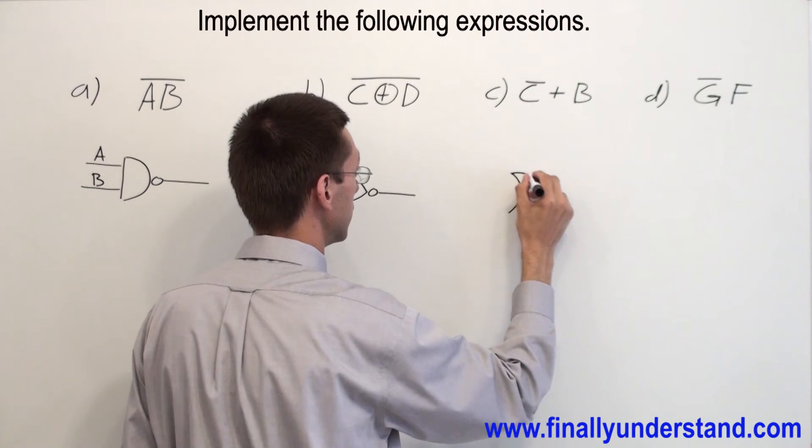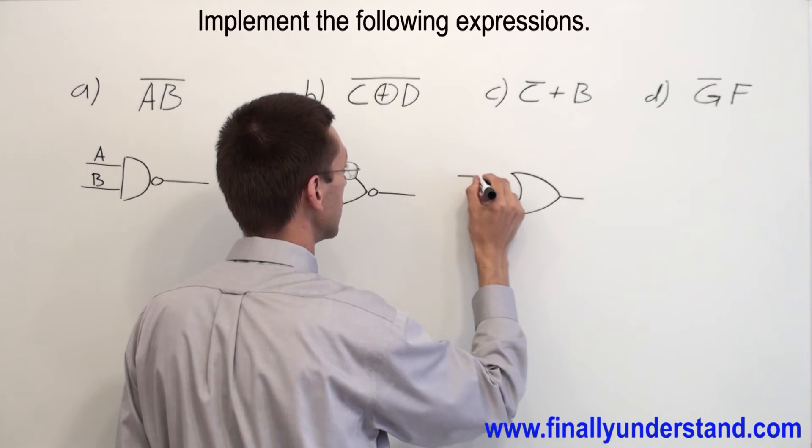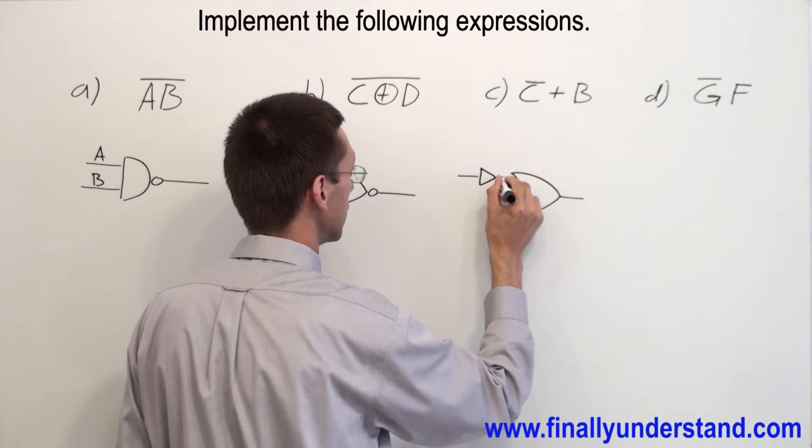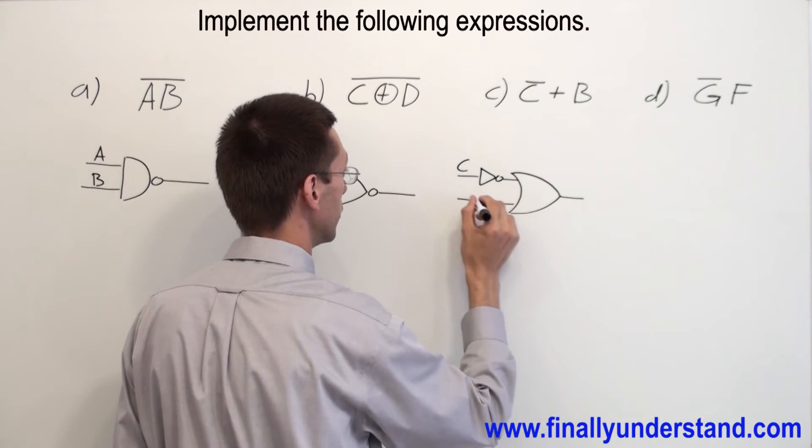So I'm going to draw an OR gate. And input C is connected to the inverter. And this is my input B.